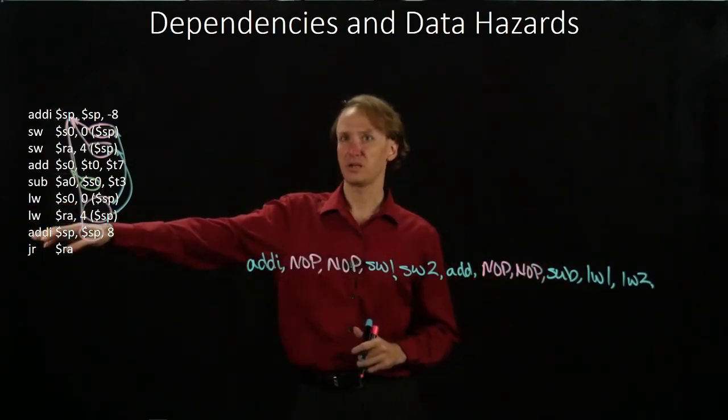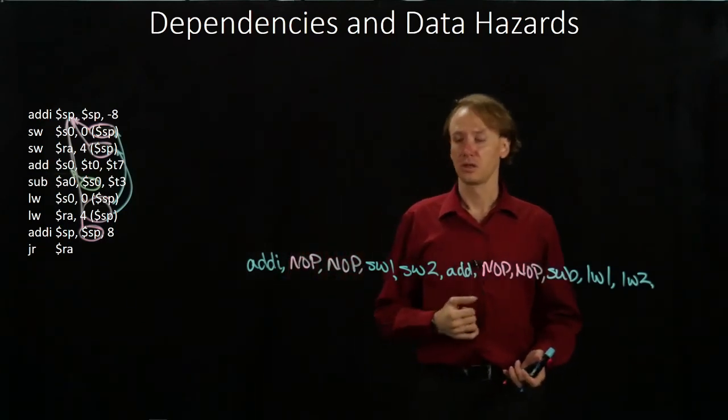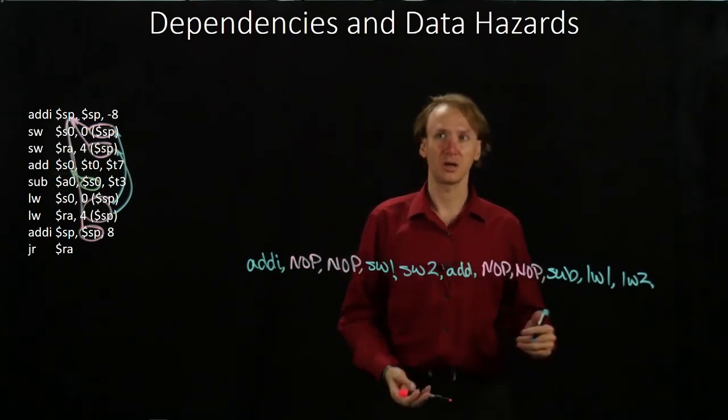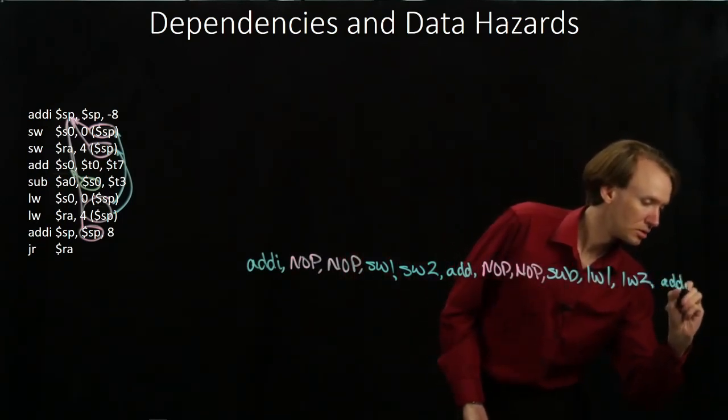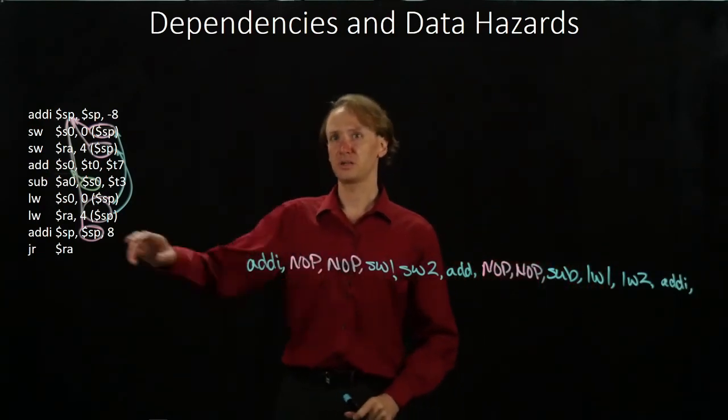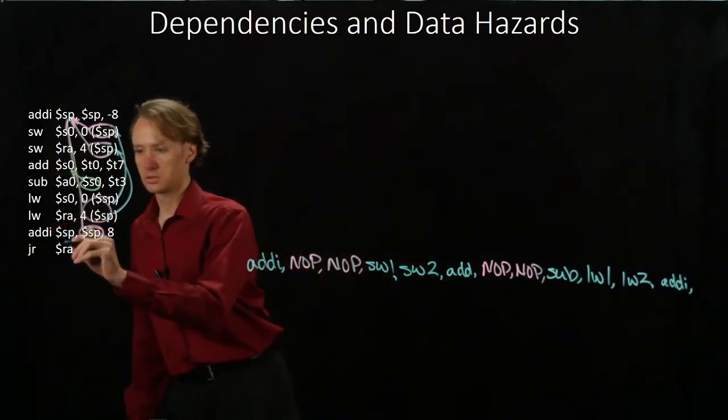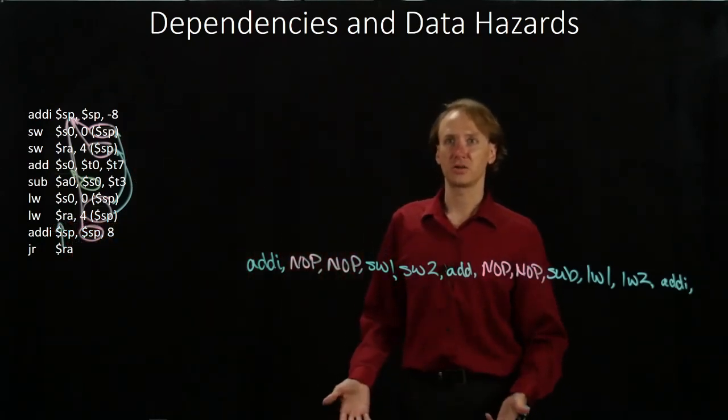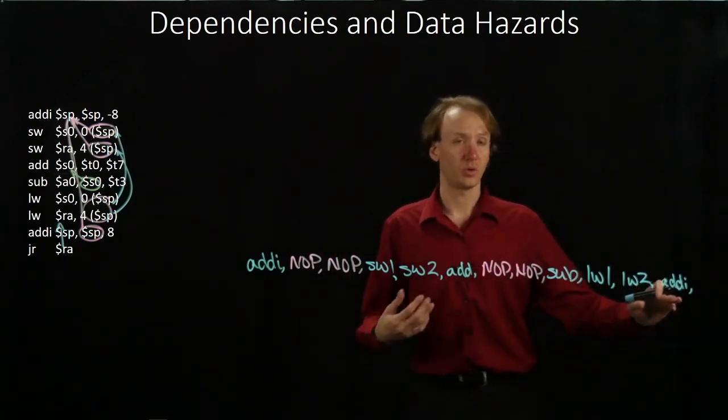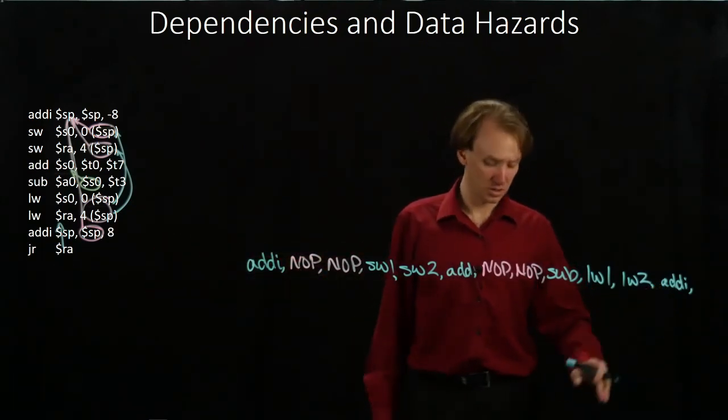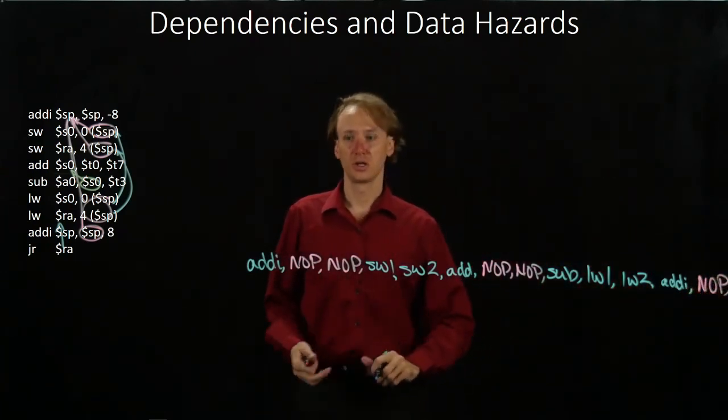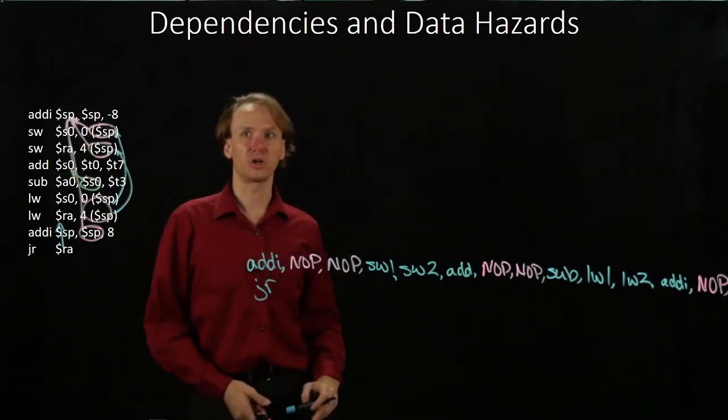Next, we have an add immediate instruction and then the jump register instruction. The add immediate instruction is dependent on our first add immediate, which again has completed a long time ago. And our jump register instruction is dependent on our return address. So there's actually a dependency there as well. And we've had one cycle between when we've loaded that data and when we'd like to use it. So I'm going to need to add one no-op instruction between those two. Then I can have my jump register instruction.